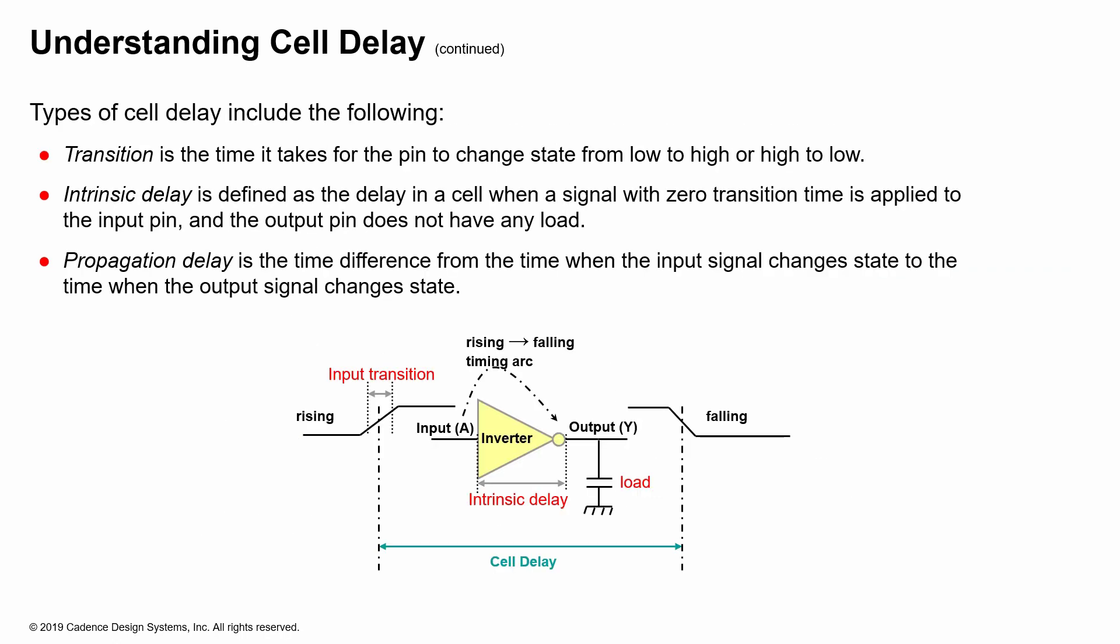You can break down cell delay into transition times, intrinsic delay, and propagation delay. Transition time is when the pin has to change states from low to high or high to low - that is considered transition. Intrinsic delay is the delay of the cell when a signal with zero transition time is applied to the input pin, and the output pin does not have any load.